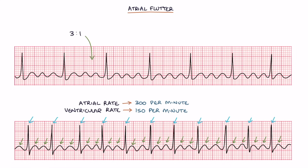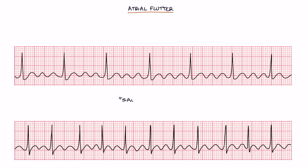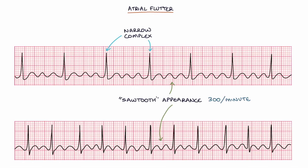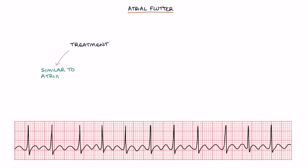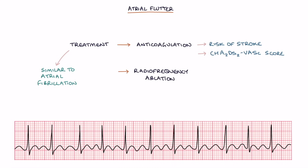There may be 3:1, 4:1, or variable conduction ratios. Atrial flutter gives a sawtooth appearance on an ECG, describing repeated P-waves occurring at around 300 per minute with a narrow complex tachycardia. Treatment of atrial flutter is similar to atrial fibrillation, including anticoagulation to reduce the risk of stroke based on the CHADS-VASc score. Radiofrequency ablation of the re-entrant rhythm can be a permanent solution.